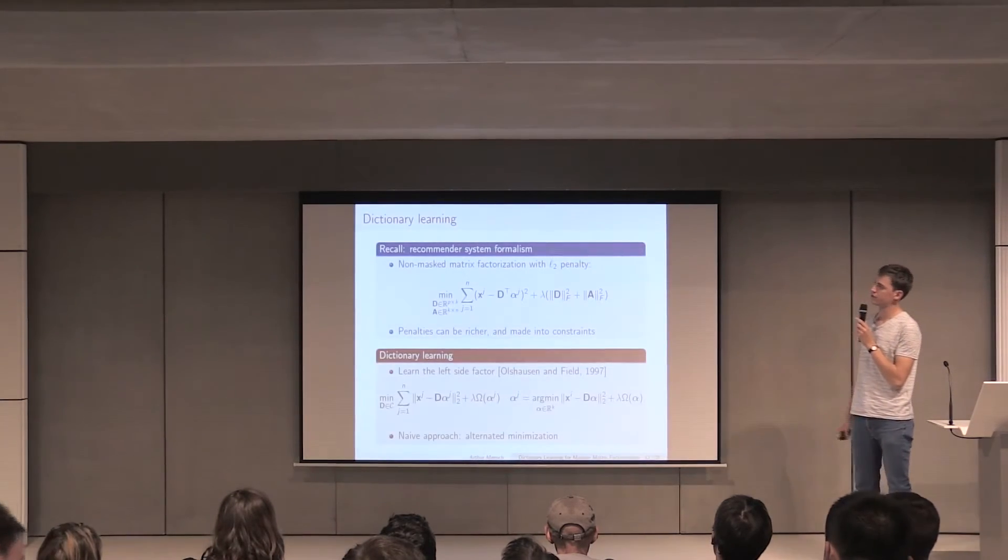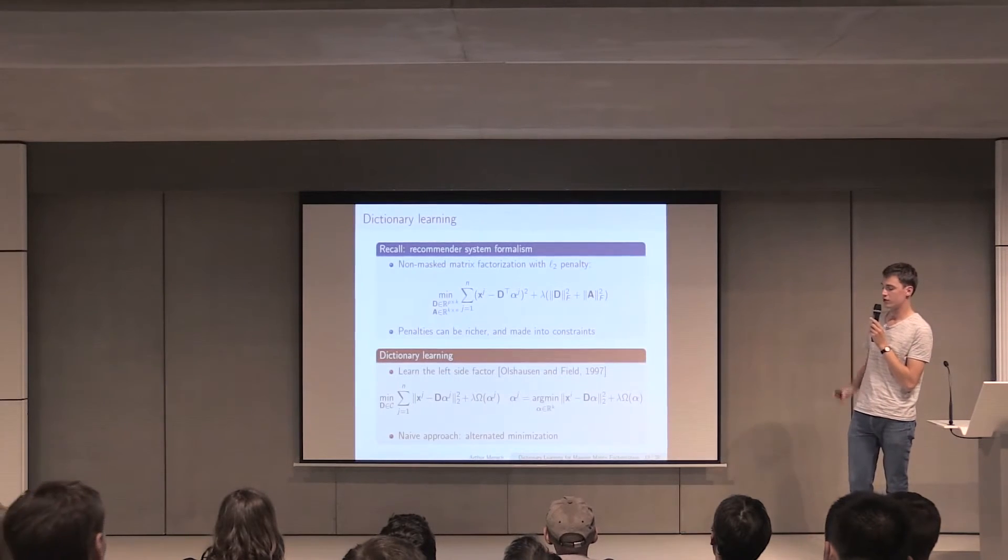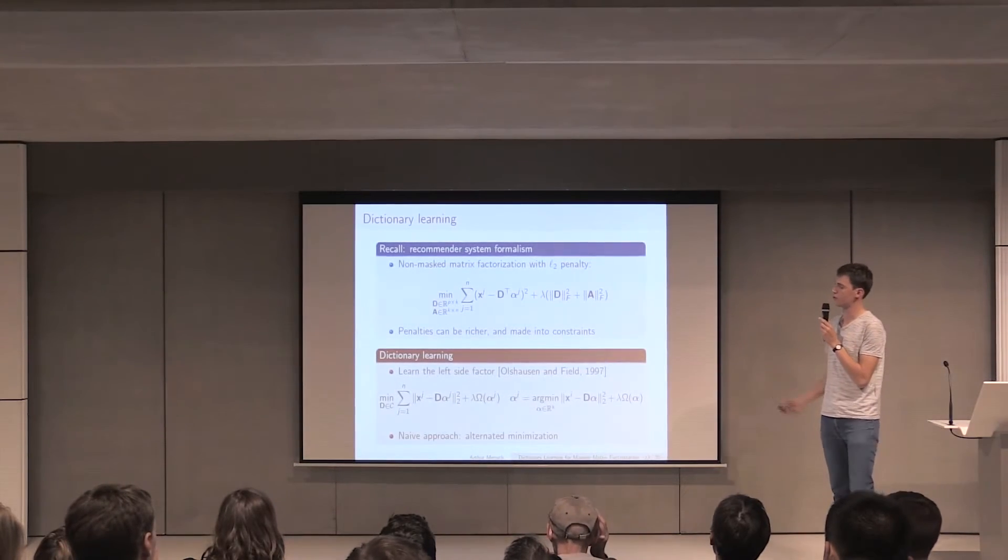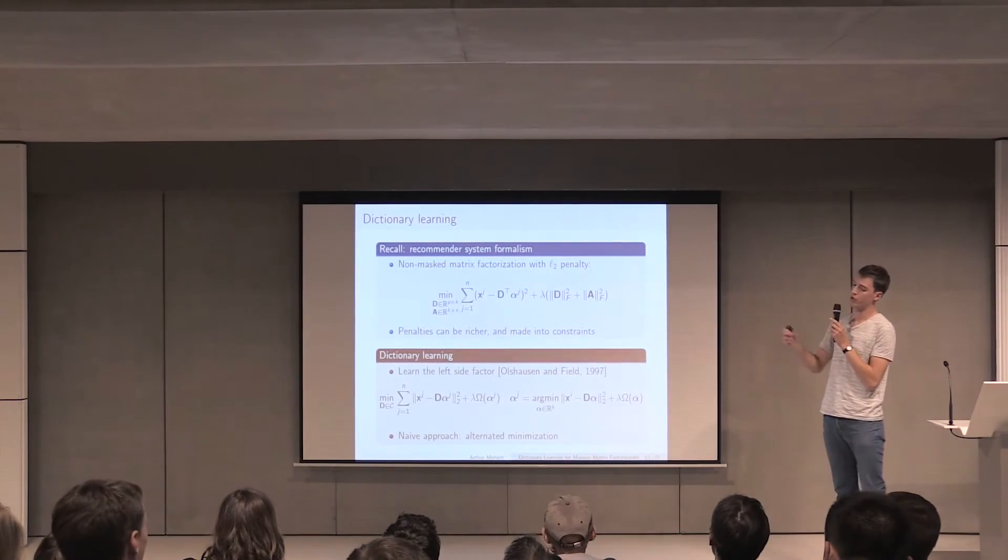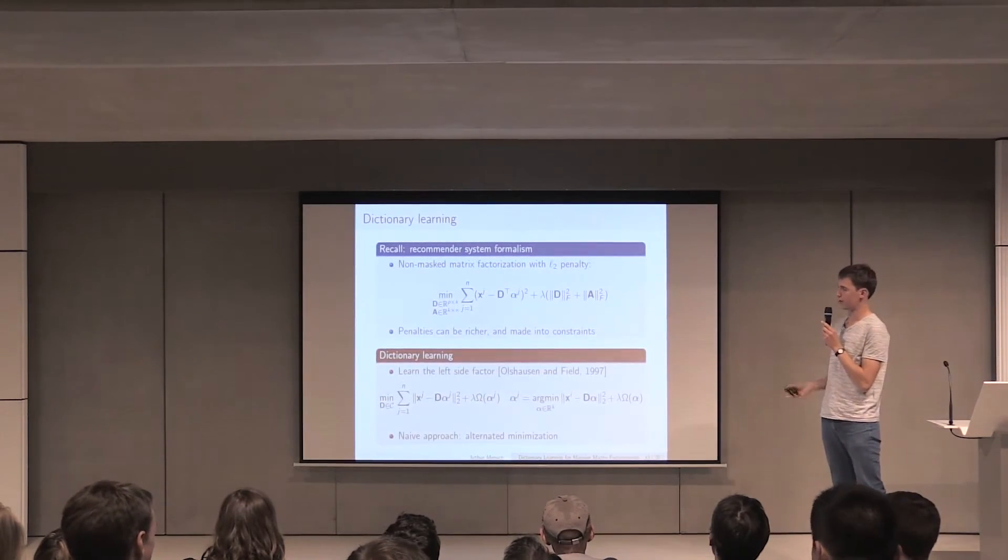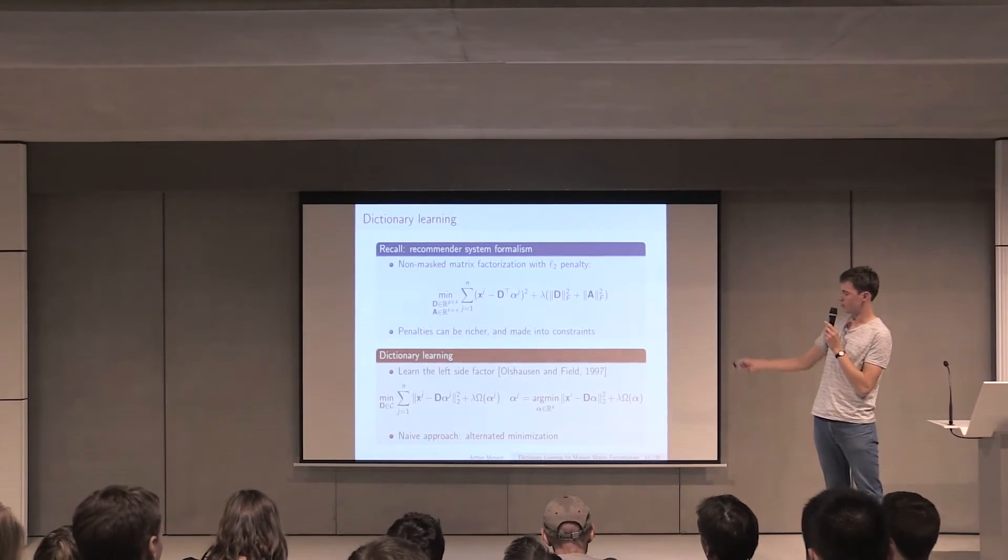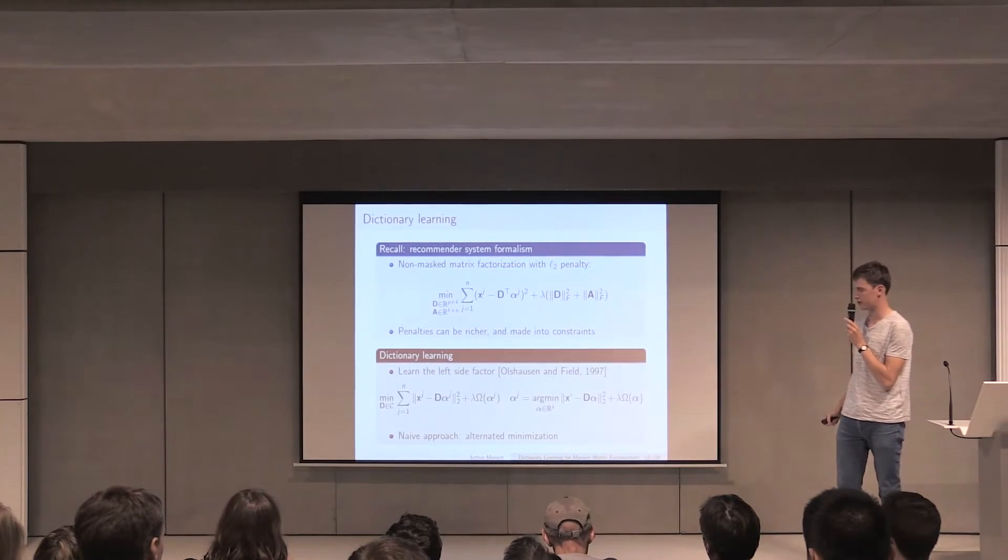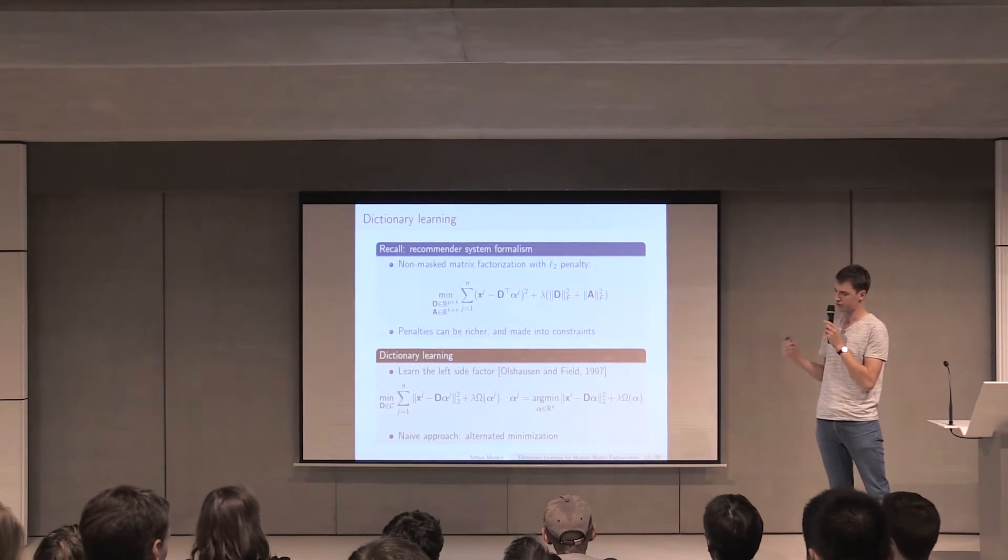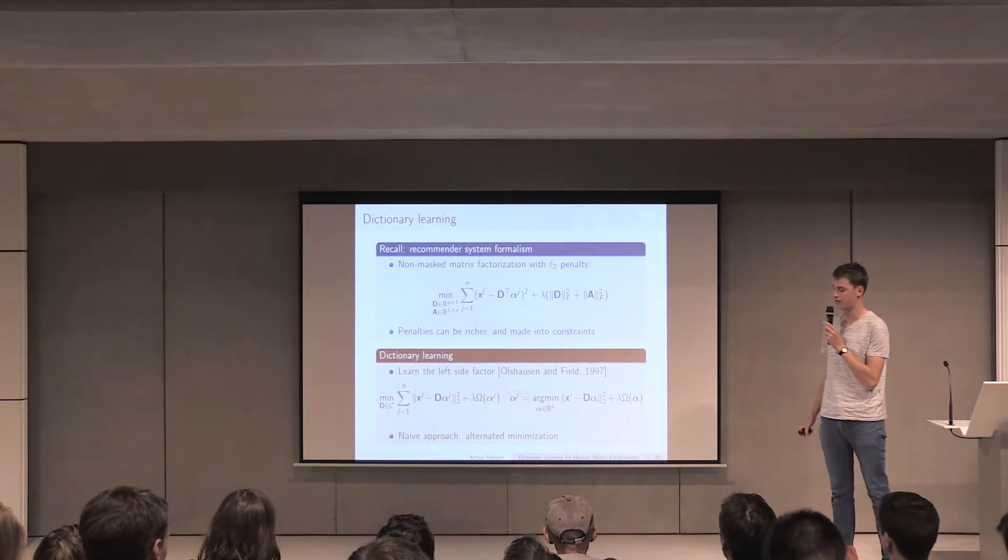In order to understand this algorithm, we need to reformulate the objective function that I introduced before. If you look at the matrix factorization problem forgetting about masks, and you do L2 penalties, then you end up with this kind of objective function where we only sum over the columns here. The penalties can be made into constraints, and typically if you take the equation above, you can reformulate it as a problem with a latent factor, a sequence of latent factors alpha-j, and the objective function becomes a function of the left side factor only.